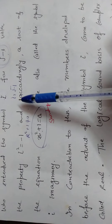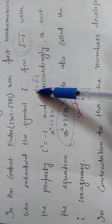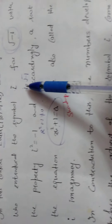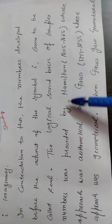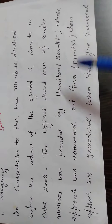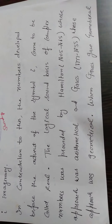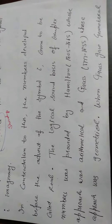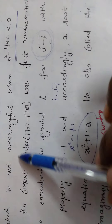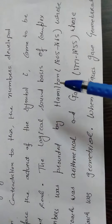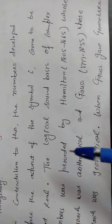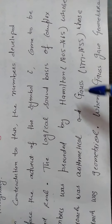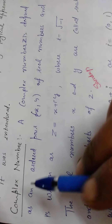Till now Euler had only used the symbol iota — he had only written the square root of minus 1 as iota. The mathematical background and logically sound basis of complex numbers were provided by Hamilton and Gauss. They also discussed the geometrical features and properties of complex numbers. So the symbol iota was introduced by Euler, while the geometrical and mathematical foundations were developed by Hamilton and Gauss.